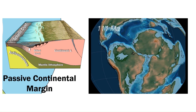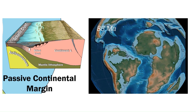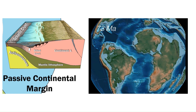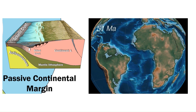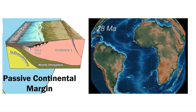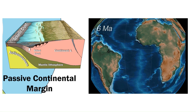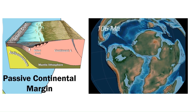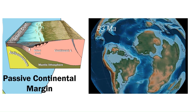As the rift widens, seafloor spreading starts in the new ocean and the two continental fragments move farther and farther apart. The margins of each continent subside beneath sea level, making continental shelves where thick sequences of sedimentary rocks are deposited. The animation on the right shows an ongoing example of this stage: the widening of the Atlantic Ocean.